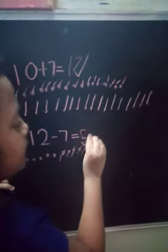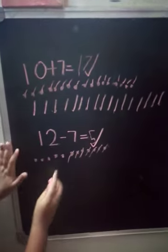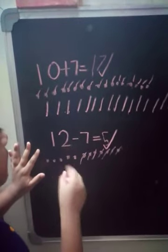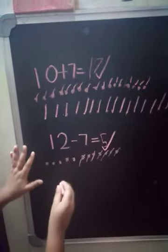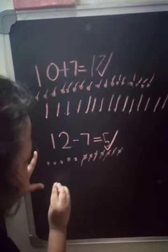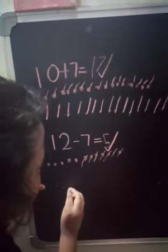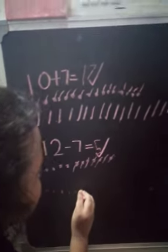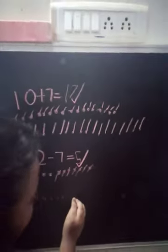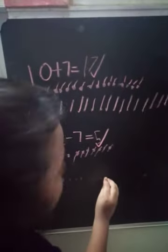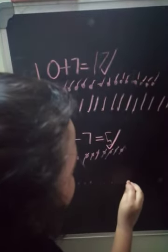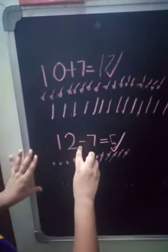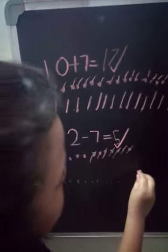I am impressed. How she has done? First, she has taken the bigger number, 12. 1, 2, 3, 4, 5, 6, 7, 8, 9, 10, 11, 12. Now I gave her minus 7 so that she has crossed 7 dots.